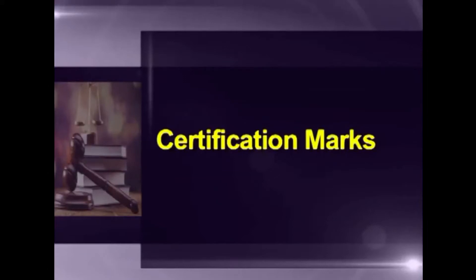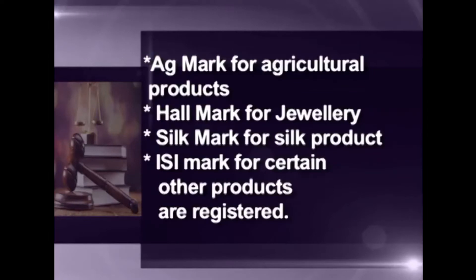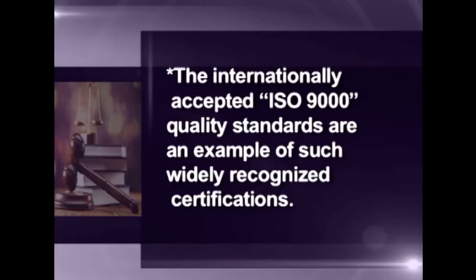Certification marks: these marks serve the purpose of certifying the quality of goods which are traded. This is an important safeguard for the protection of the public against misleading practices. The definition of certification mark is not the same in all countries. In India, certification marks such as AG mark for agricultural products, HAL mark for jewelry, SILK mark for silk products and ISI mark for certain other products are registered. The internationally accepted ISO 9000 quality standards are an example of such widely recognized certifications.